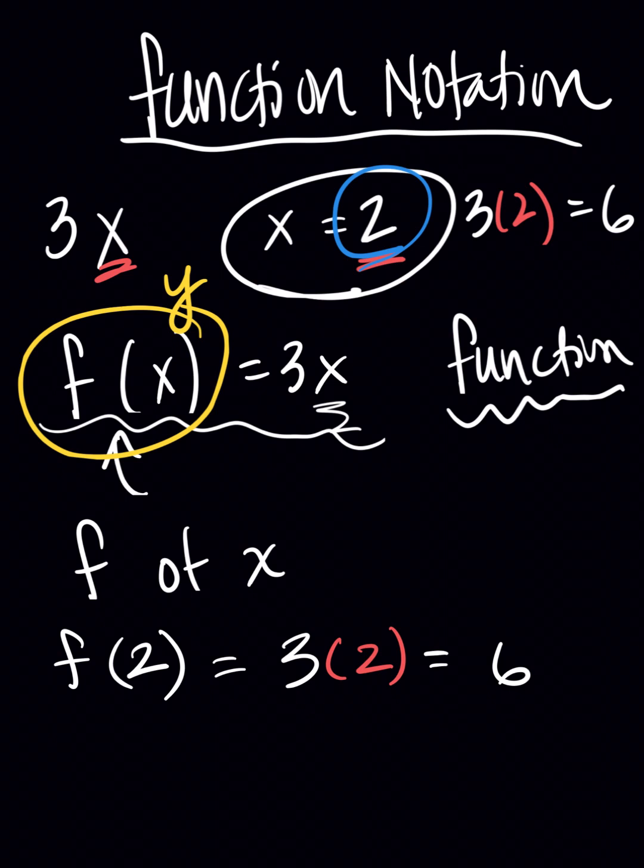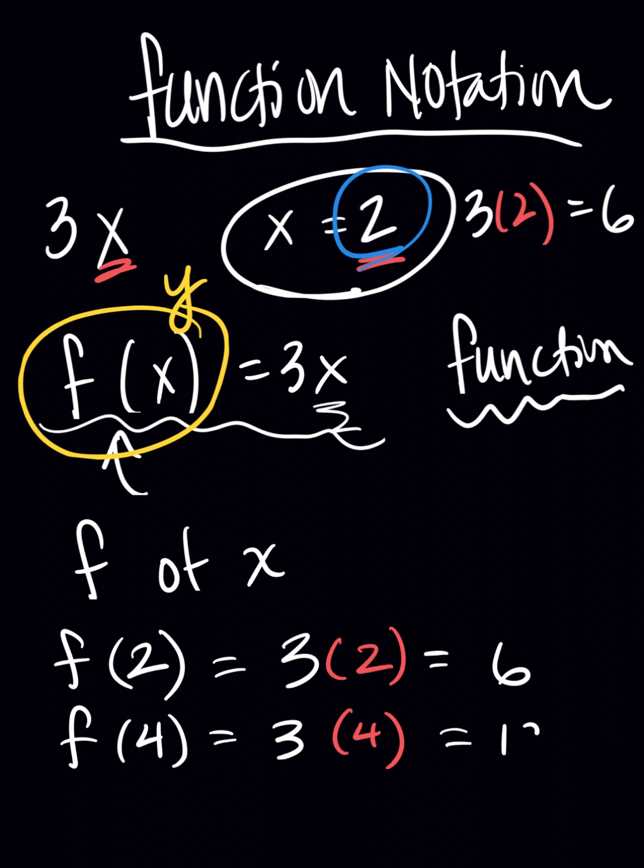So if I were making a table of values like we've done so many times, I could say f of x. Let's do it this way. x and then f of x. So here, I would say that x is 2, and f of x is equal to 6. If I wanted to find another value, say I wanted to find f of 4. Well, that would be 3 times 4, which would be equal to 12. So when x is 4, f of x is equal to 12.